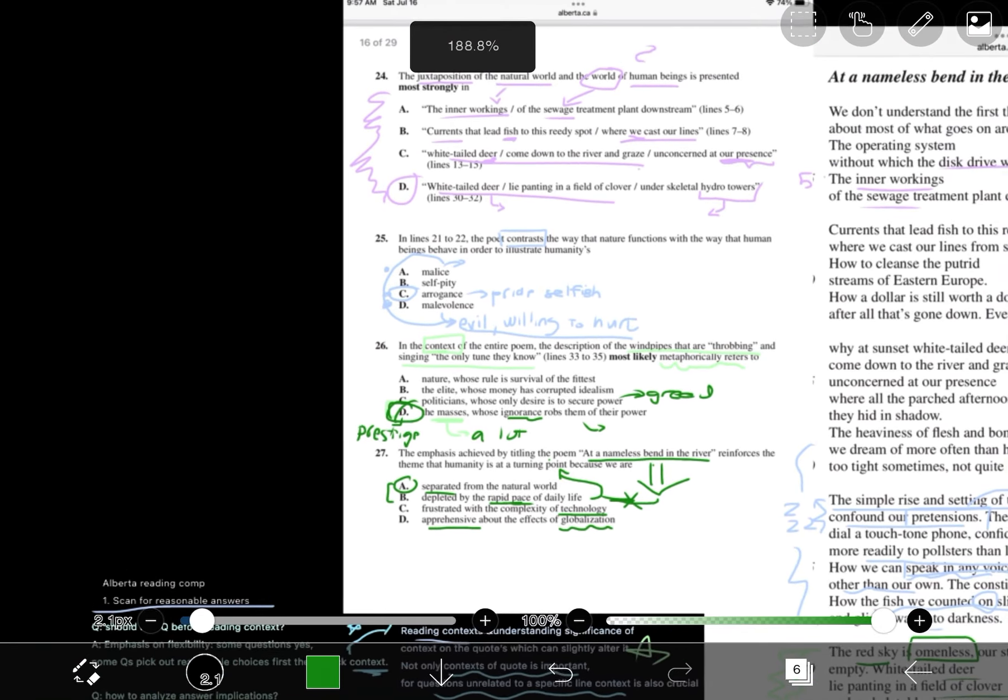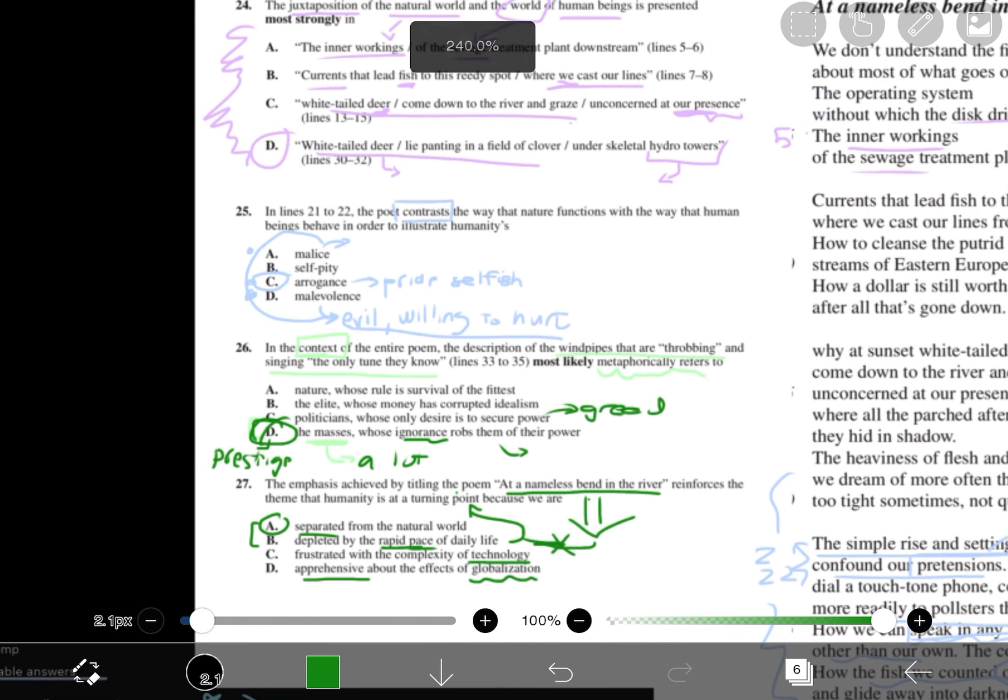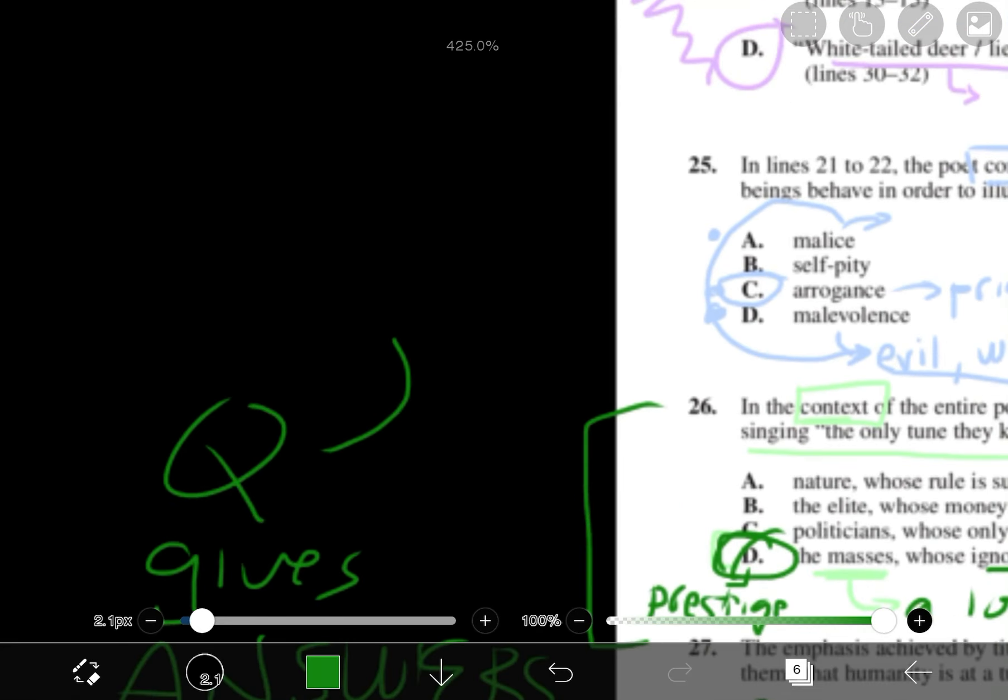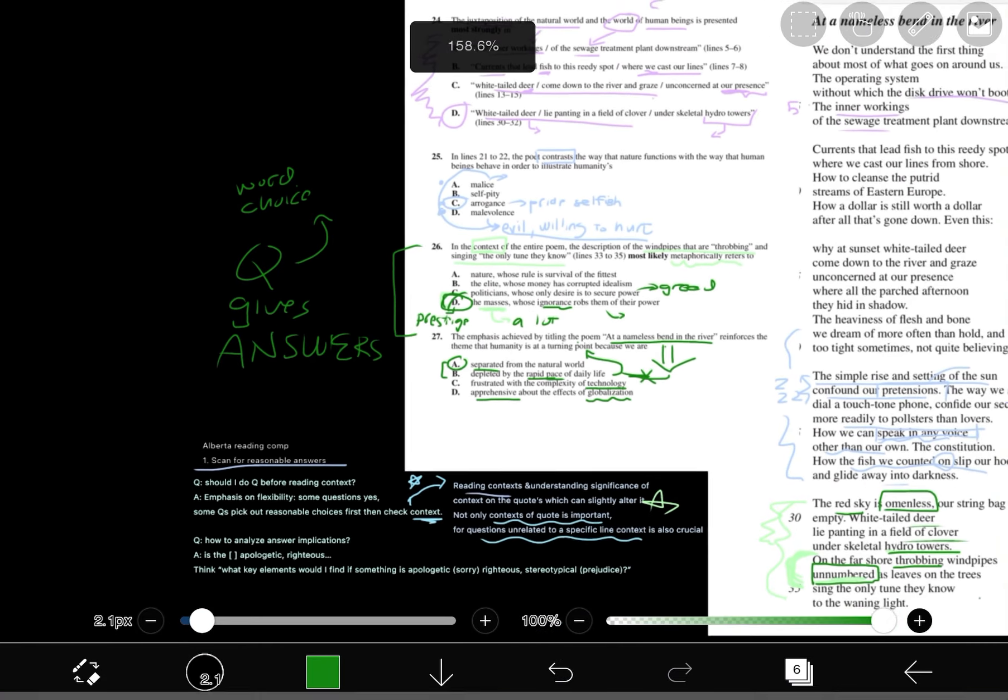So the big point, the big lesson that we can learn. There are a lot. So there are a lot of lessons you can learn. But one of the big things we found from these is that questions give answers. Especially in reading comps. Questions. And what I mean by question gives you answers is their word choice. What words they use. And I hope this video was helpful for you.